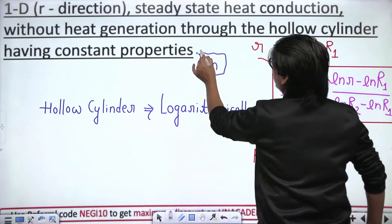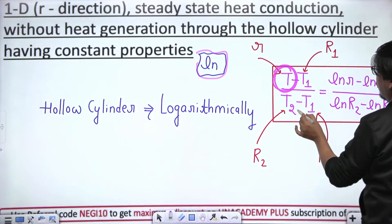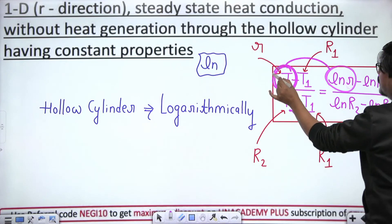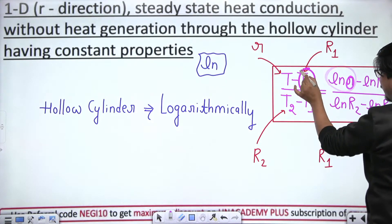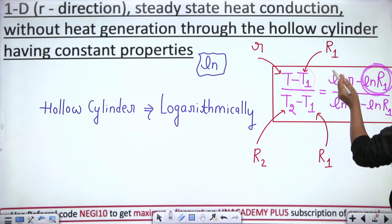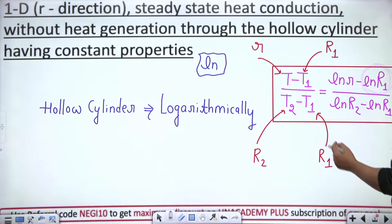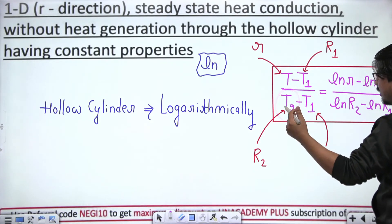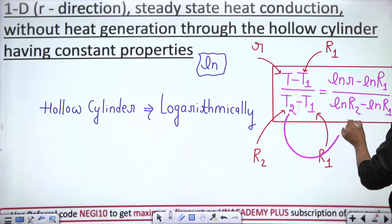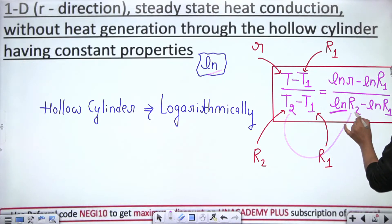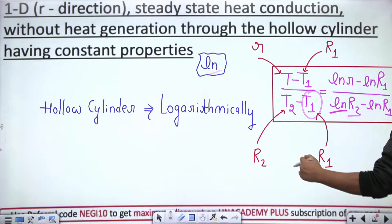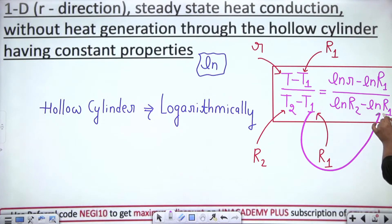For the hollow cylinder, temperature varies logarithmically, so ln appears. T corresponds to ln(r); T1 on the inner surface at R1 corresponds to ln(R1); T2 on the outer surface at R2 corresponds to ln(R2); and T1 in the denominator again uses ln(R1). Logarithmically vary kare na, toh bas ln aa gaya — it's that simple.